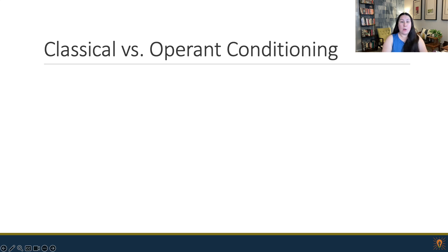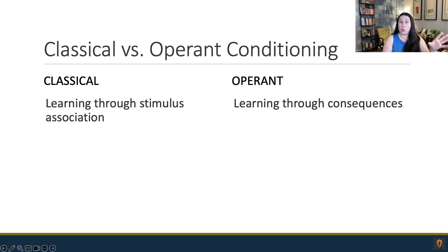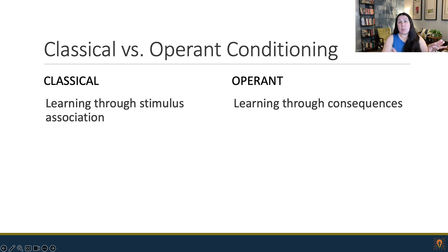Let's talk about classical and operant conditioning — those are the two kinds of conditioning. Classical conditioning is learning through stimulus association. Those dogs drool whenever they hear a bell — that's classical. Operant conditioning is learning through consequences. In classical, the stimulus comes before the behavior. In operant, the stimulus comes after the behavior.